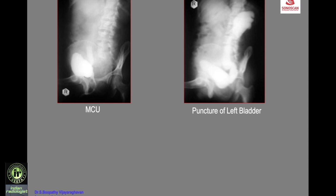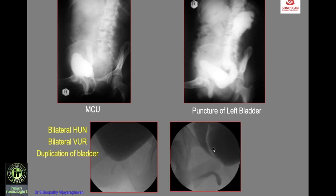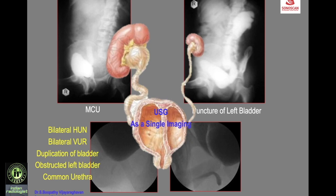There is bilateral hydroureteronephrosis due to vesicoureteric reflux, with the right bladder communicating with the urethra and the left bladder obstructed — confirmed by puncture showing no communication with the urethra. Repeat MCU after left bladder puncture confirmed the normal urethra communicating with the right bladder only. All these procedures were needed to confirm the diagnosis initially made with ultrasound alone as a single imaging modality.